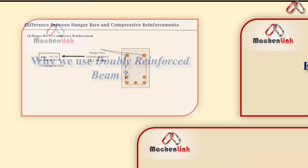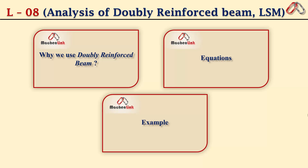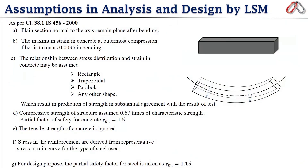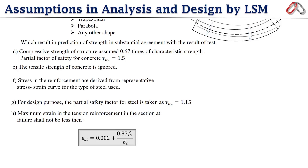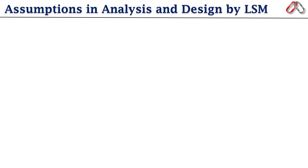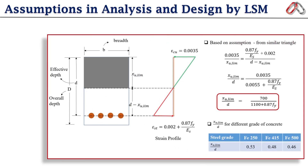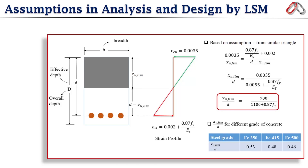We have now covered why we use doubly reinforced beams and the difference between hanger bars and compression bars. Moving to the next part, let's start with the assumptions of doubly reinforced beams. The assumptions of singly reinforced beams studied in the previous lecture are also applicable here. Provision of compression reinforcement ensures that the failure mode will be ductile, so the limitation of the xu/d ratio need not be strictly followed, unlike in singly reinforced beam analysis and design.